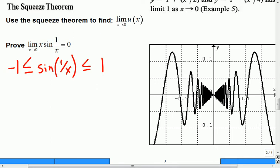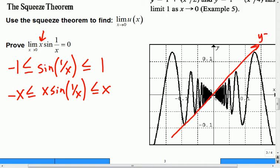So if this is where I started, I actually want an x there as well. How could I add an x to this inequality? Multiply everybody through by x. So that'll be negative x is less than or equal to x sine (1/x), which is less than or equal to x.